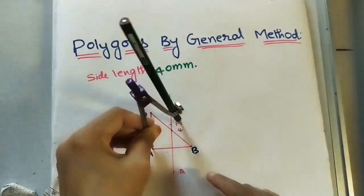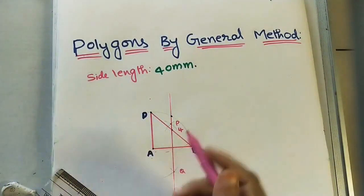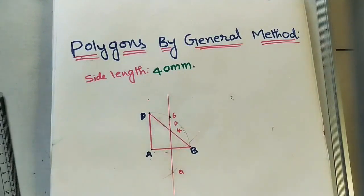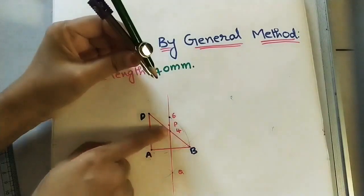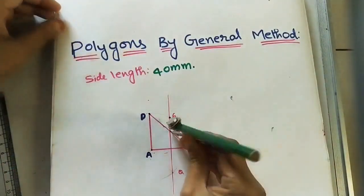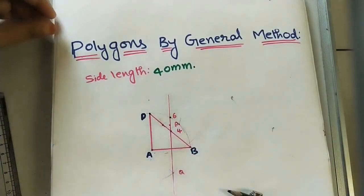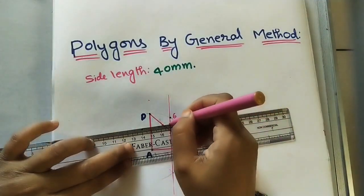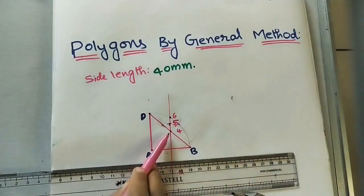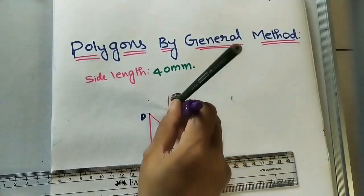To get point 5, take AB as radius (four centimeters) and draw an arc; where it intersects the perpendicular bisector is point 6. To find point 5, we bisect the gap between points 4 and 6. Take more than half of the four-to-six distance, use 6 as center and draw an arc, then 4 as center with the same radius to cut the arcs. Join the intersection points to find the midpoint — that is point 5.